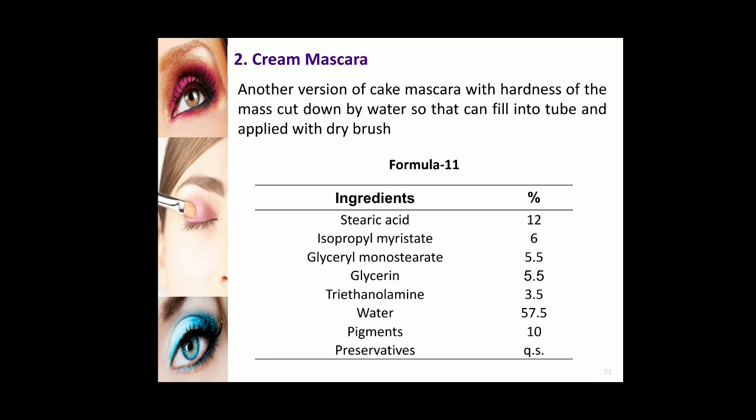The oil reduces flaking. Waxes improve the adhesion of the film to the eyelashes, increase water resistance, and add body and gloss. Water soluble gums help to suspend the pigments and act as a film former, reducing smearing of the pigments after application. Cream-based mascara provides volume to thin, sparse eyelashes and adds depth to the eyes. However, they can smudge easily and hence require a special kind of applicator.